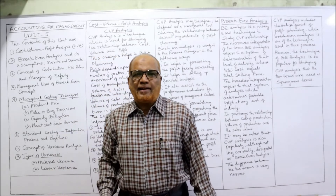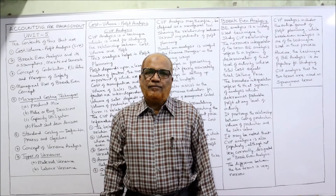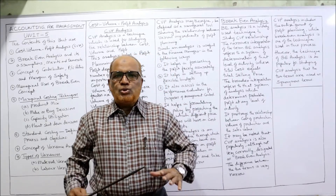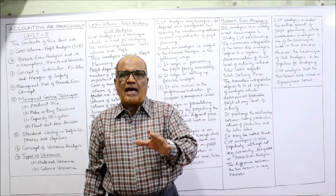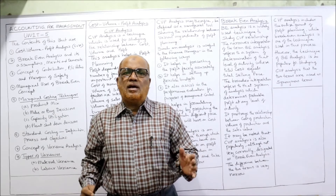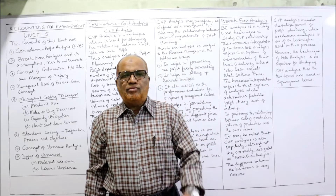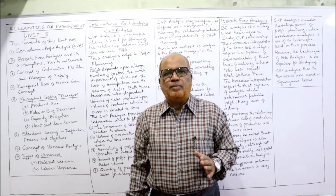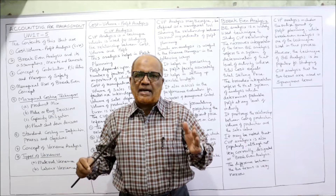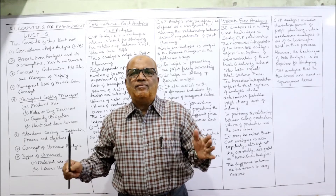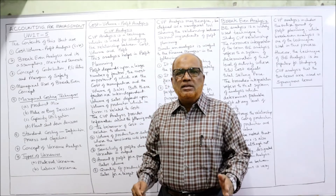Hello viewers, welcome to my channel. I'm Hasha Malikhan. I'm going to start unit number five in the subject Accounting for Management. So far, two units have been completed: unit number three, Financial Statement Analysis — ratio analysis and common size statement analysis — and unit number four, Cash Flow Statement, along with tax planning, tax avoidance, tax evasion, cost classification, and cost sheet.